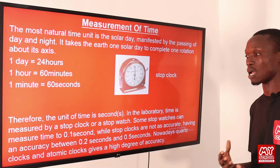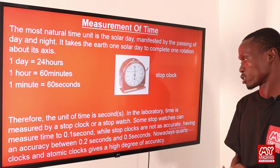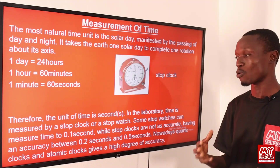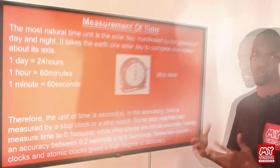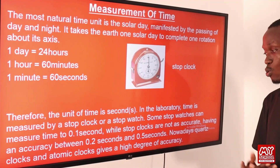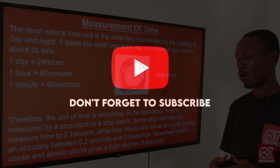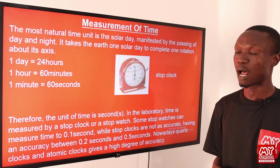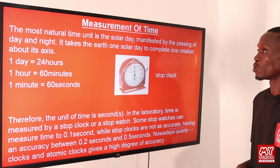We also have other multiples of time: one day equals 24 hours, one hour equals 60 minutes, and one minute equals 60 seconds. In the laboratory, to measure time, we make use of a stop clock or stopwatch. Some stopwatches can measure time to an accuracy of 0.1 seconds, while stop clocks are not as accurate and can measure time to an accuracy of between 0.2 and 0.5 seconds. To get a high degree of accuracy, nowadays we make use of the quartz clock and the atomic clock.